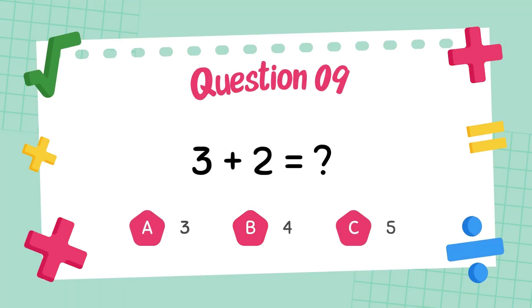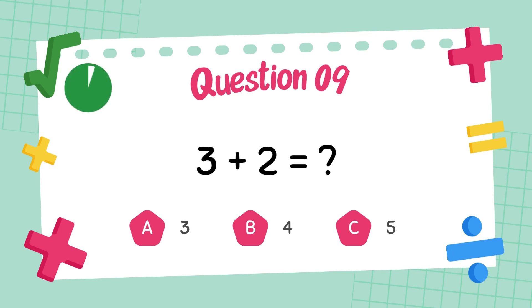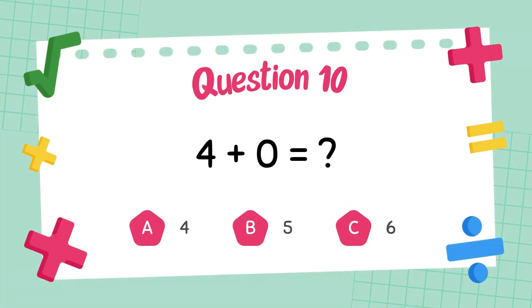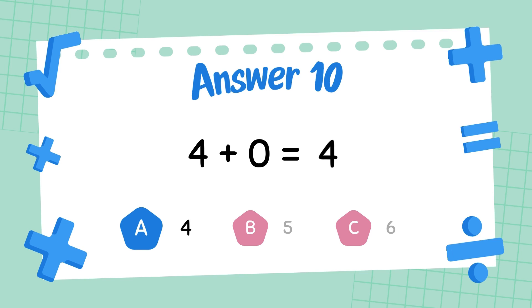What is 3 plus 2? The answer is 5. What is 4 plus 0? The answer is 4.